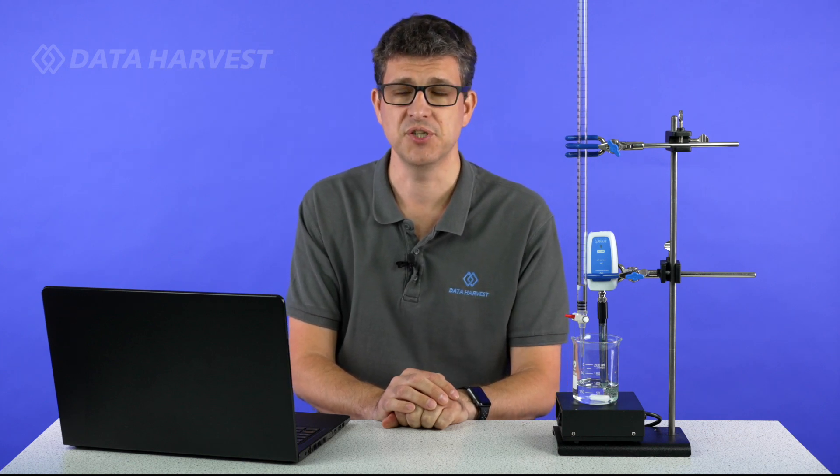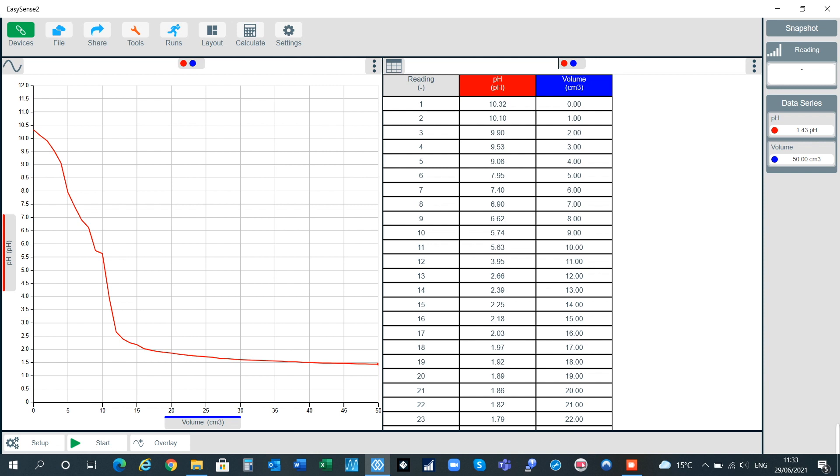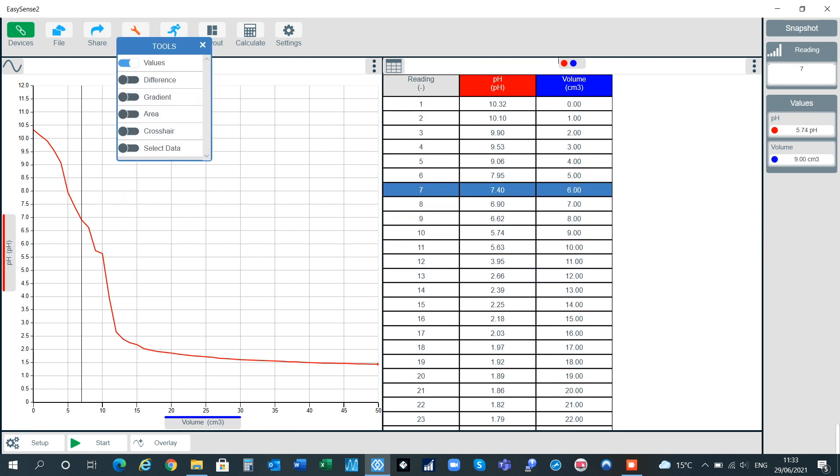You can now save your software, save it to CSV or save it as an EasySense2 file, whatever you wish to do with it. You can also go into the tools section here, have values, and you can see how all of that works on there as well. If you want to see more on our secondary academy, please visit the Data Harvest website on data-harvest.co.uk. Thank you.